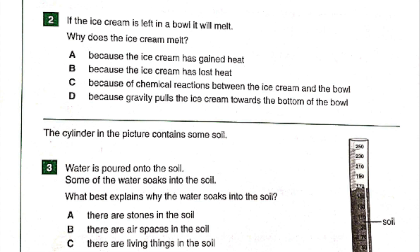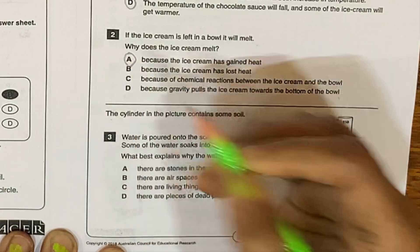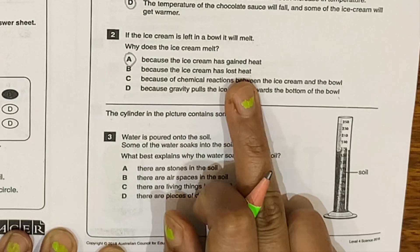Question two. If the ice cream is left in a bowl, it will melt. Why does the ice cream melt? A. Because the ice cream has gained heat. B. Because the ice cream has lost heat. C. Because of chemical reactions between the ice cream and the bowl. D. Because gravity pulls the ice cream towards the bottom of the bowl. The answer is A: because the ice cream has gained heat.